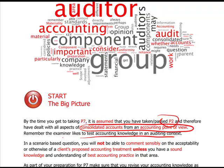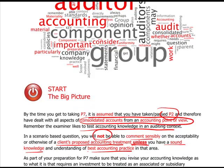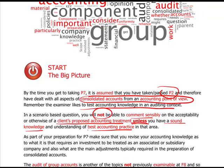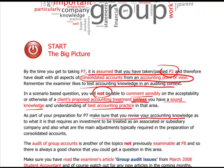In a scenario-based question, which is the way they tend to be, you will not be able to comment sensibly on the acceptability or otherwise of a client's proposed accounting treatment, unless you have a sound accounting knowledge of best accounting practice in that area. As part of your preparation for P7, make sure that you revise your accounting knowledge. It is going to be vital when looking at the group subsidiary investment situation within the audit paper. The audit of group accounts is another of the topics not previously examined at F8, so this is the joy of P7 — something new, which is good.